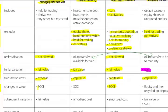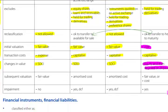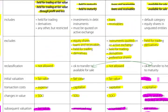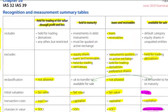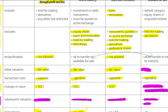Changes in value go through comprehensive income, comprehensive income, comprehensive income. For available for sale, changes are recognised as equity and then recycled on disposal. Subsequent value is at fair value, amortised cost, amortised cost, and fair value or cost for available for sale financial assets. With reference to impairment: no impairment for held for trading. Yes, there is impairment using DCF principles for held to maturity. Yes, and again using DCF for loans and receivables. And yes, again for available for sale.